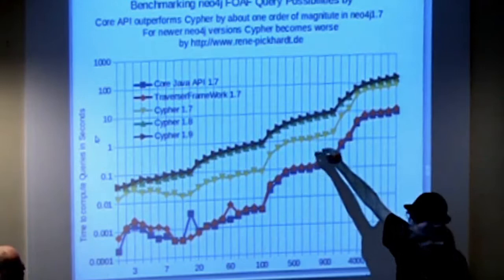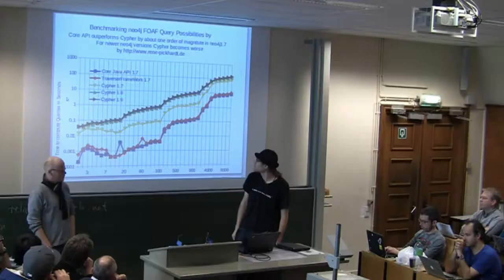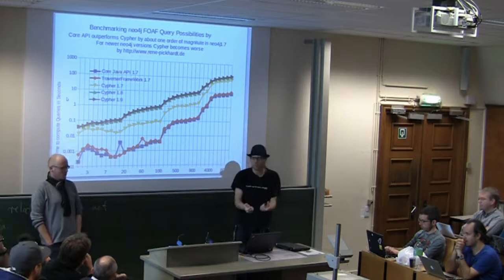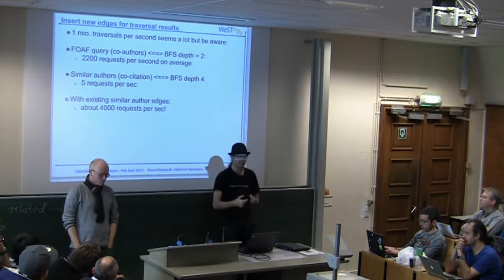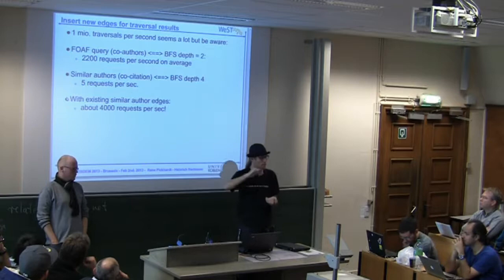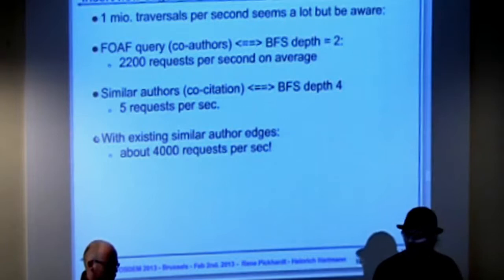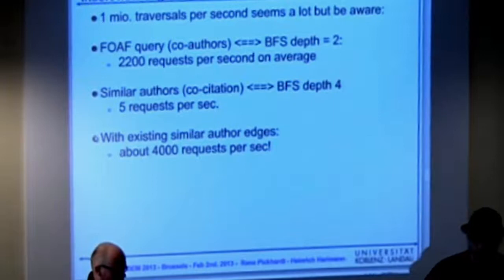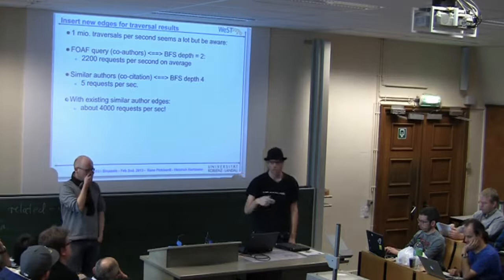We also see with larger data sets that there's really an order of magnitude difference between Cypher and the core API. Another lesson: even though 1 million traversal steps seems like a lot, you have to be careful — with 1 million traversal steps I can handle about 2,200 requests per second for co-authorship. But similar authors is a breadth-first search of depth 4, and those grow exponentially, leaving only about 5 requests per second. For these expensive traversals, we do them as a data mining bulk process, pre-computing results and storing new edges in the graph, which gets us back to around 4,000 requests per second.